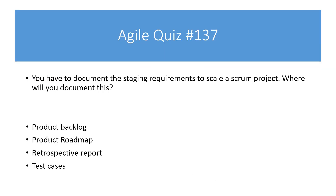Today's question is: you have to document the staging requirements to scale a scrum project — where will you document this? The choices are: product backlog, product roadmap, retrospective report, and test cases.